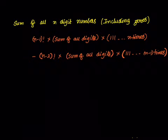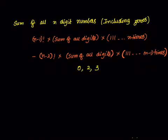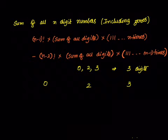Now let us take an example to understand how this formula is derived. I will take a very simple example, because it is always better to take small simple examples so that we can understand the concept. Then once we understand it, we can generalize for any numbers. Suppose the digits given are 0, 2, 3, and we want all 3 digit numbers.